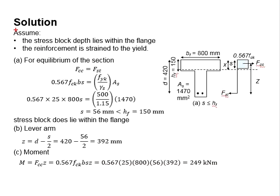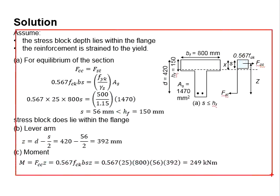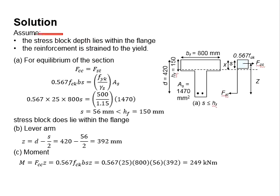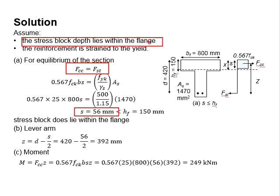From the calculation step here, you first assume that the stress block lies within the flange. Later, based on the equations of static equilibrium, you find your s to be less than the height of the flange. That means your assumption is valid.